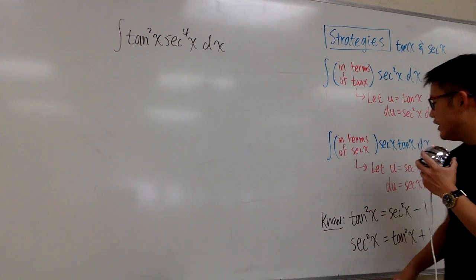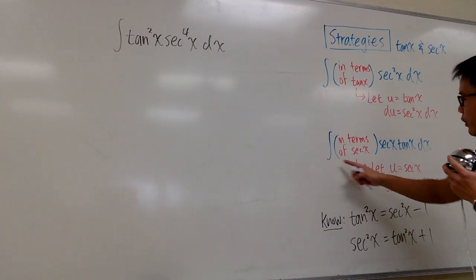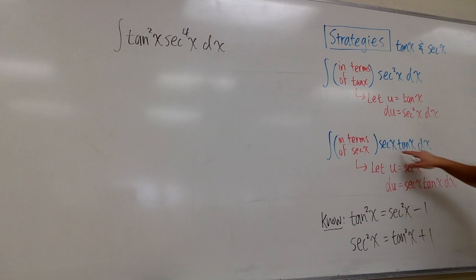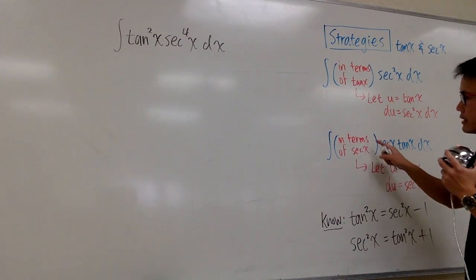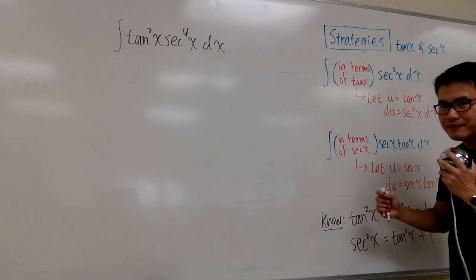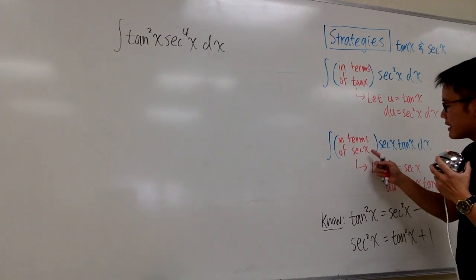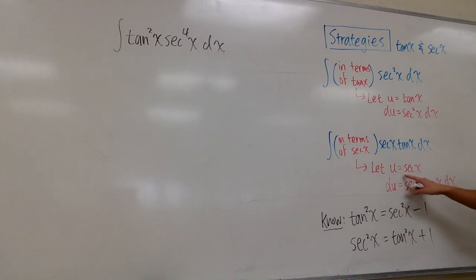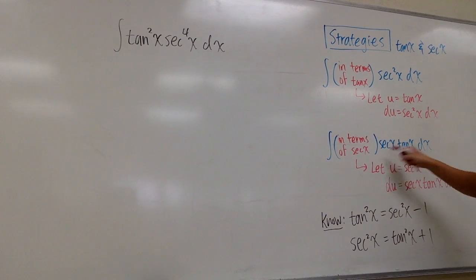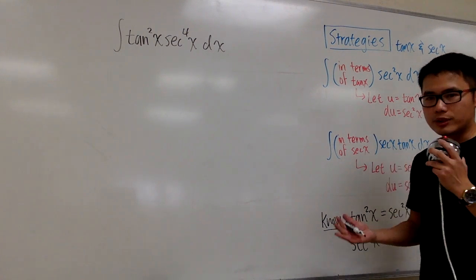On the other hand, if we have the integral in this form — with secant x times tangent x dx on the side, and the first part is an expression in terms of secant x — then we let u equal secant x, and du equals secant x times tangent x dx, which matches that part.